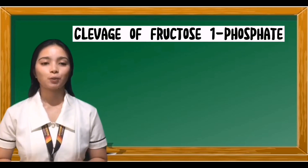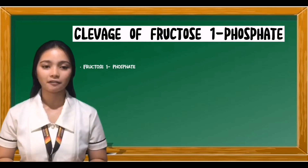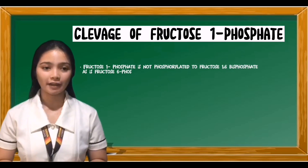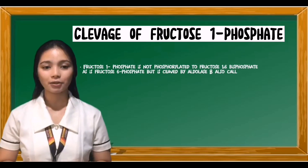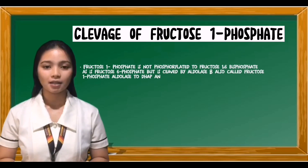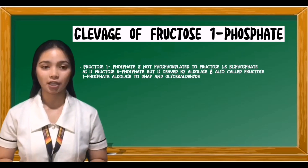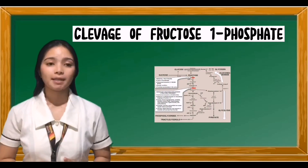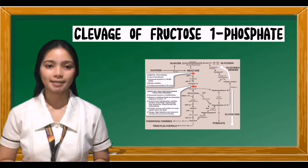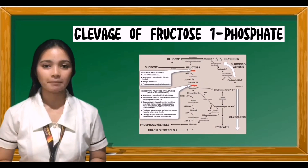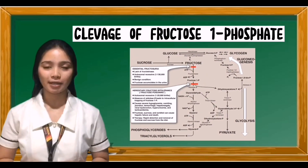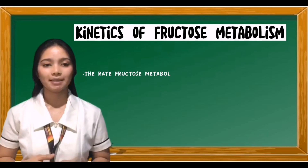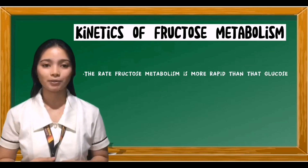Fructose 1-phosphate is not phosphorylated to fructose 1,6-bisphosphate as is fructose 6-phosphate, but is cleaved by aldolase B — also called fructose 1-phosphate aldolase — to dihydroxyacetone phosphate (DHAP) and glyceraldehyde. DHAP can directly enter glycolysis or gluconeogenesis, whereas glyceraldehyde can be metabolized by a number of pathways, as illustrated in Figure 12.3.